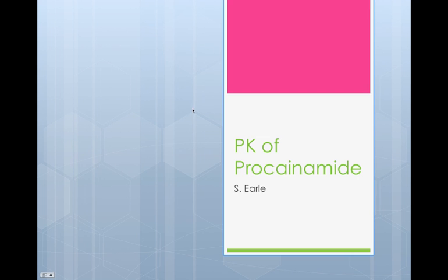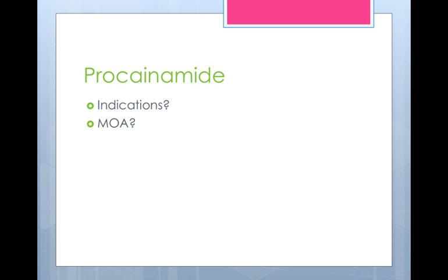Hi there. Now we're going to discuss the pharmacokinetics of procainamide. I'm going to use the same idea — we'll start out talking about what procainamide is, what it is used for, and then we will talk about the differences. We'll start with clearance and go through just like we did before. So procainamide is another antiarrhythmic as you probably realize.